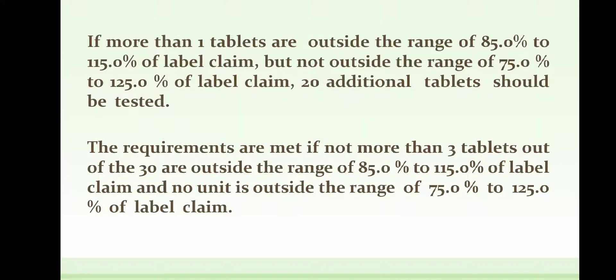If more than 1 tablet is outside the range of 85% to 115% (±15%) but not outside 75% to 125% (±25%) of the labelled claim, an additional 20 tablets must be tested. The requirements are met if not more than 3 tablets out of 30 are outside the 85% to 115% range, and no unit is outside the 75% to 125% range. So, 27 of 30 tablets must be within 85% to 115%, and the other 3 must not exceed the 75% to 125% range.